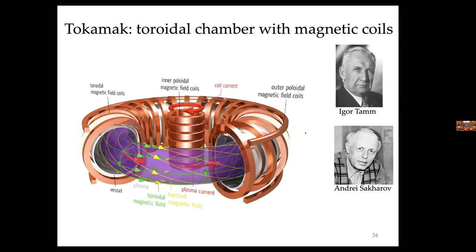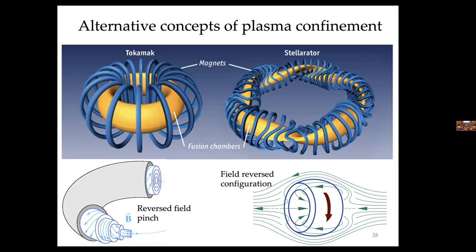In the middle of the tokamak there is a transformer solenoid — basically the plasma is the secondary of a transformer. A current runs through here, and using the right-hand rule you can see there will be a current in the plasma associated with changes in the magnetic field. The stellarator, although more complicated to manufacture, offers the advantage that you don't need a plasma current to generate the field that guides the particles.